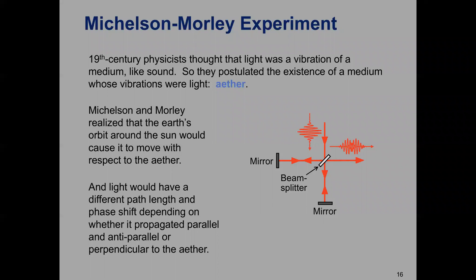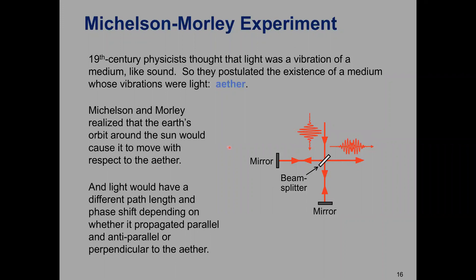Here's our interferometer from Monday. They would have had the mirror slightly tilted to see spatial fringes, but I'm ignoring that detail to make the diagram clearer. The two beams cause a phase shift between the outgoing beams, which we pick up in our fringe pattern. One arm — the horizontal one on screen — is along the direction the earth is moving through the ether. Using Galilean relativity, the velocity of light and the velocity of the earth through the ether add together differently on this arm versus the perpendicular arm, giving a different phase shift that should tell us the speed of light relative to the ether.